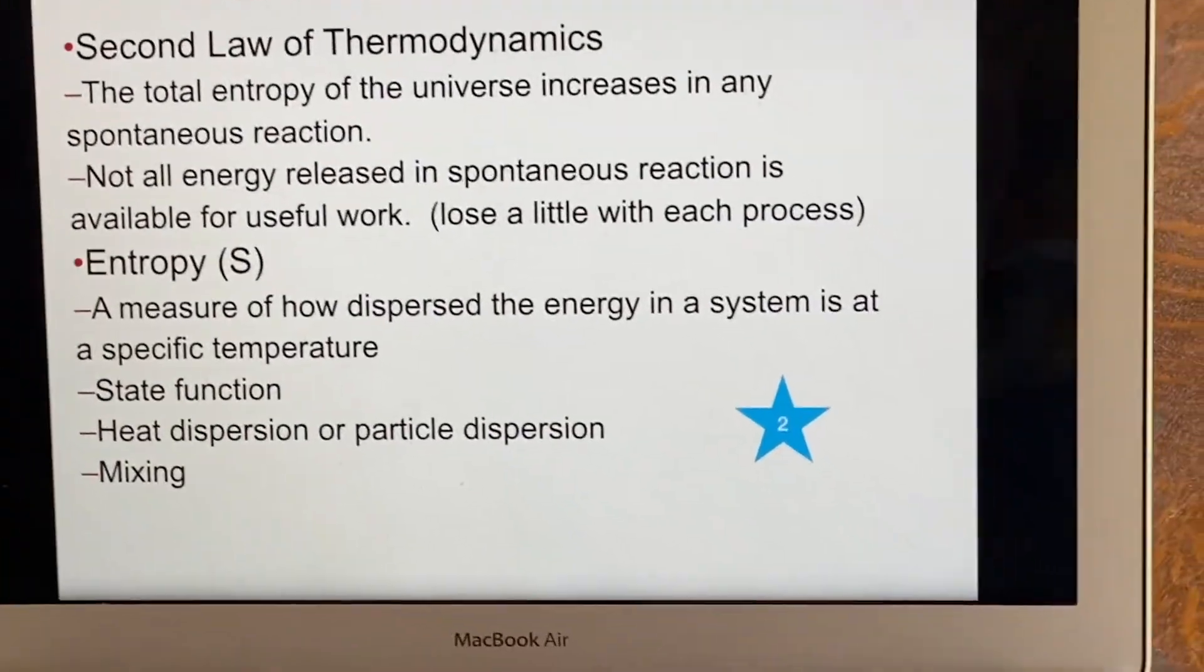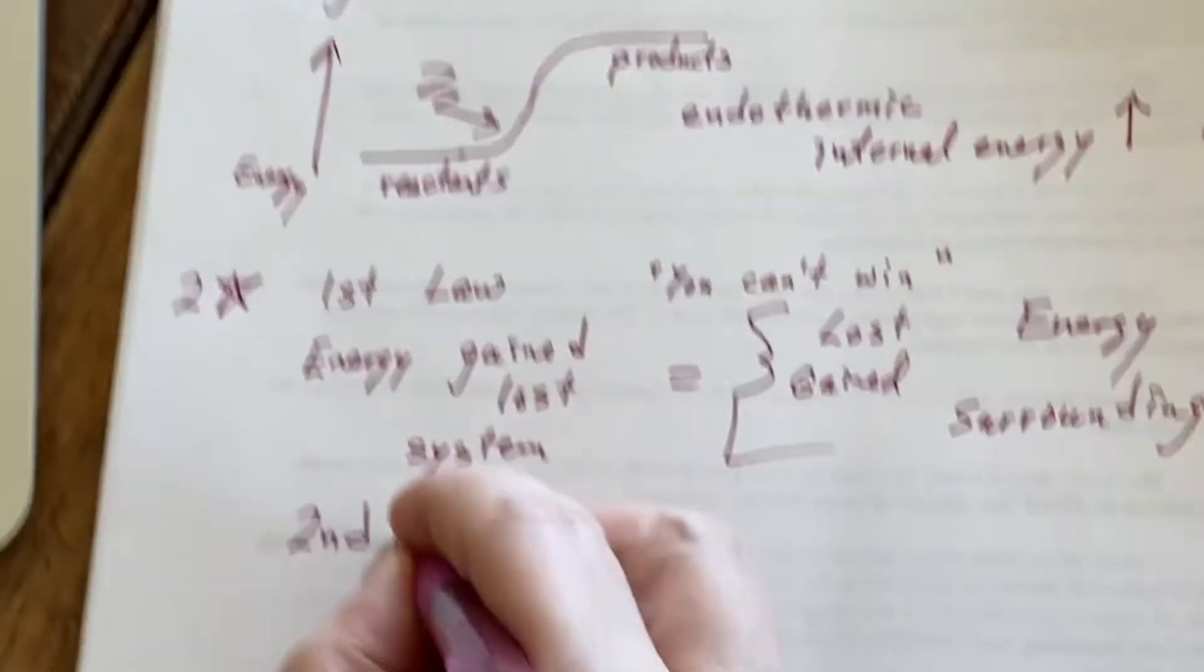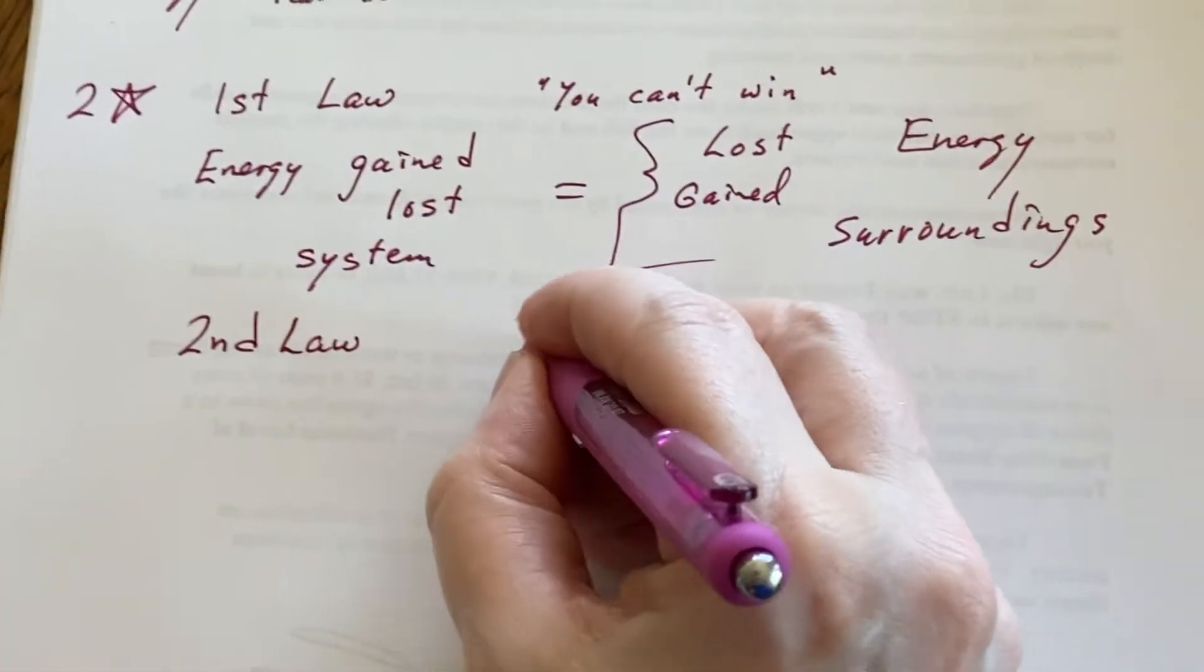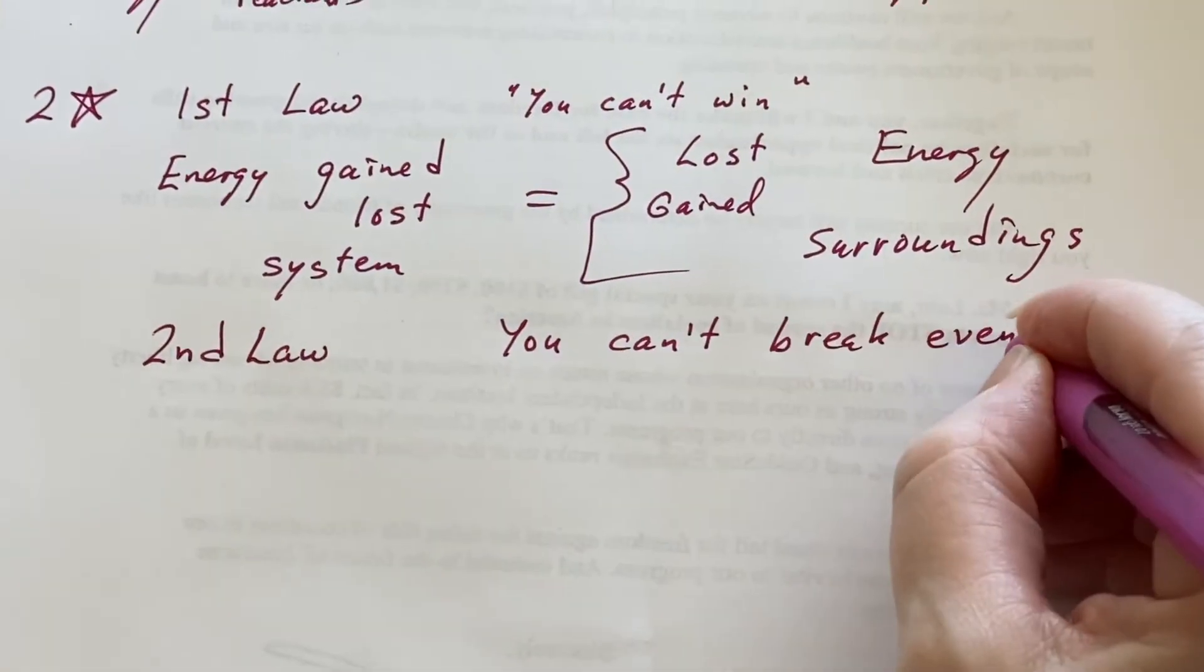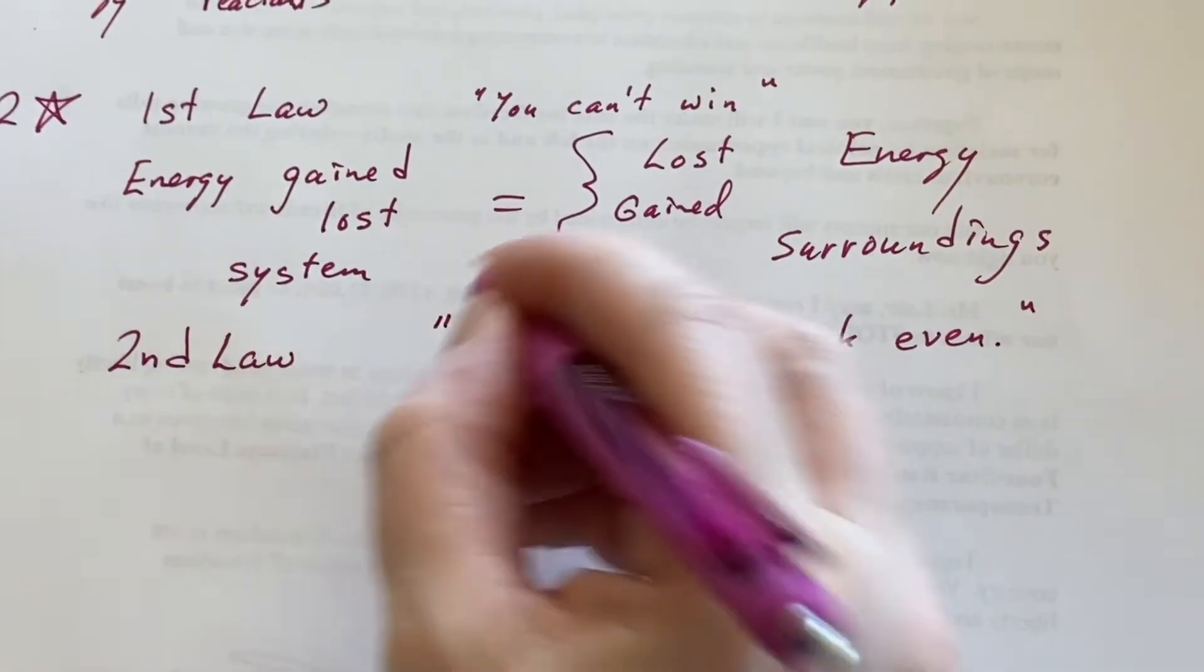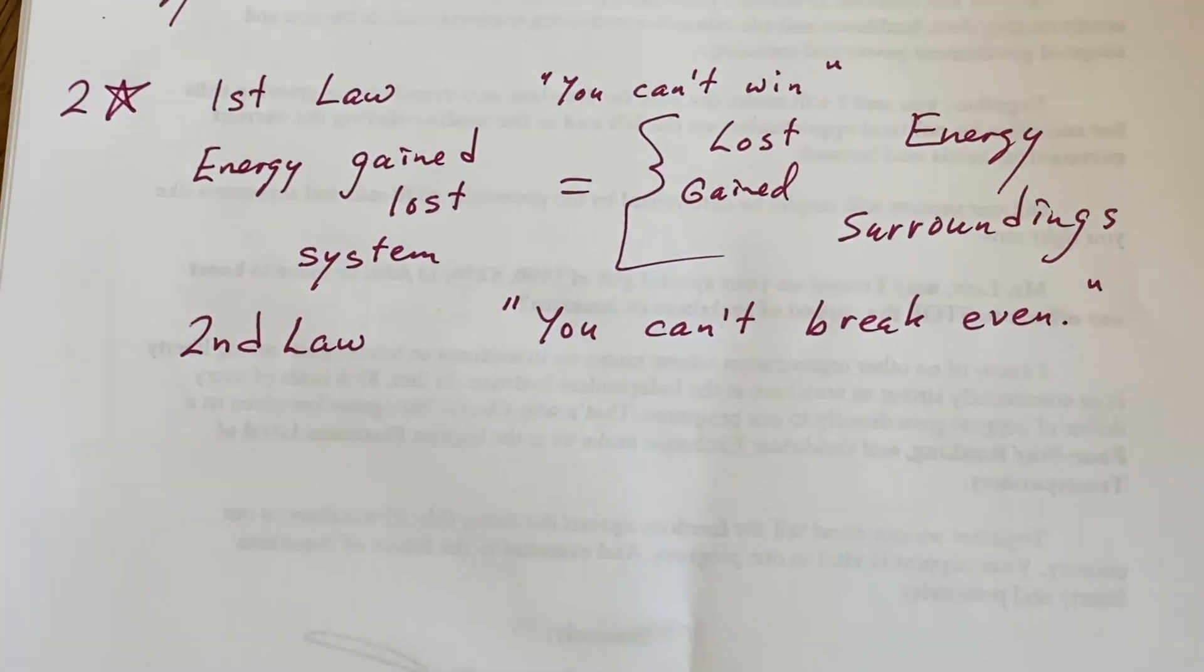Naturally, engineers then shorten the second law to you can't break even. Again, not all the energy that you can generate is going to be energy that you can use. That brings us to this concept of entropy.